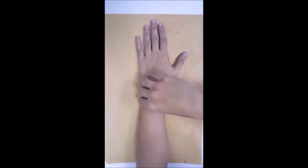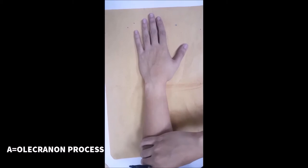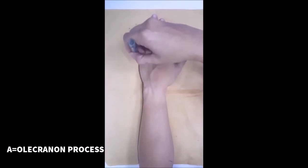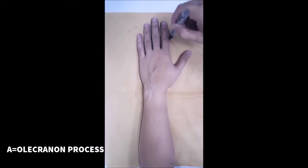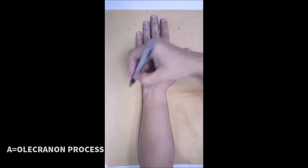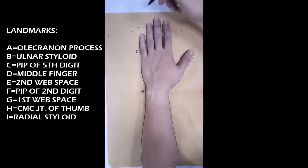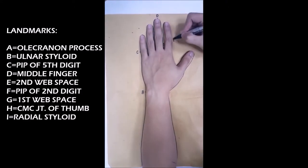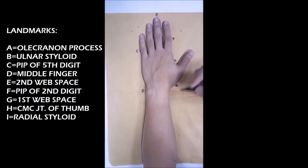Pattern making: Place the person's hand flat down on a paper towel and mark A for the olecranon process of the elbow. Then trace the outline of the upper extremity from one side of the elbow to the other. Then mark B for ulnar styloid, C for the PIP of the fifth digit, D for the middle finger, E for the second webspace, F for the PIP of the second digit, G for the first webspace, H for the CMC joint of the thumb, I for radial styloid.